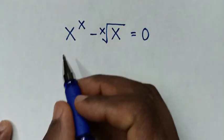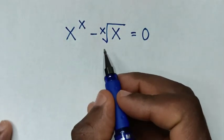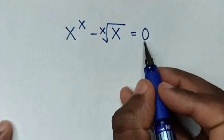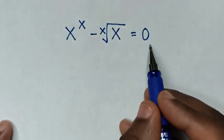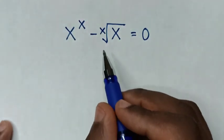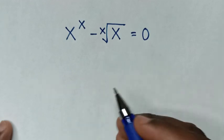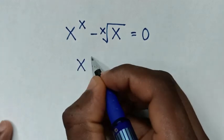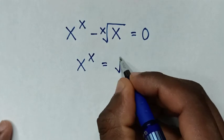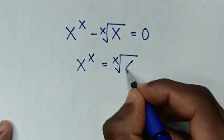Hello. How to solve x power of x minus x root of x is equal to 0, to find the value of x from this equation. So first we take this to the right side, so it will be x power of x is equal to x root of x.